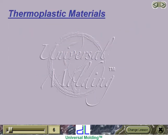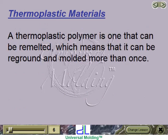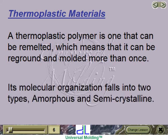A thermoplastic polymer is one that can be remelted, which means that it can be reground and molded more than once. Its molecular organization falls into two types: amorphous and semicrystalline.